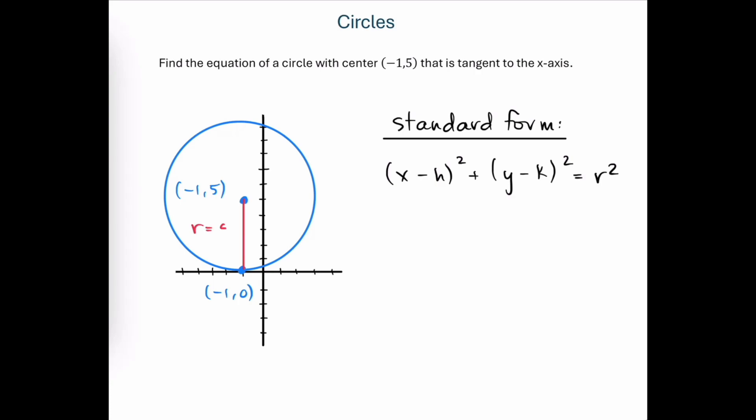It's pretty easy to see that the radius of this circle is going to be 5, which is the distance that our center point is away from the x-axis. And we're also given the coordinates of the center itself, which is negative 1, 5. So we really just need to plug those quantities into the standard form of the equation of the circle.